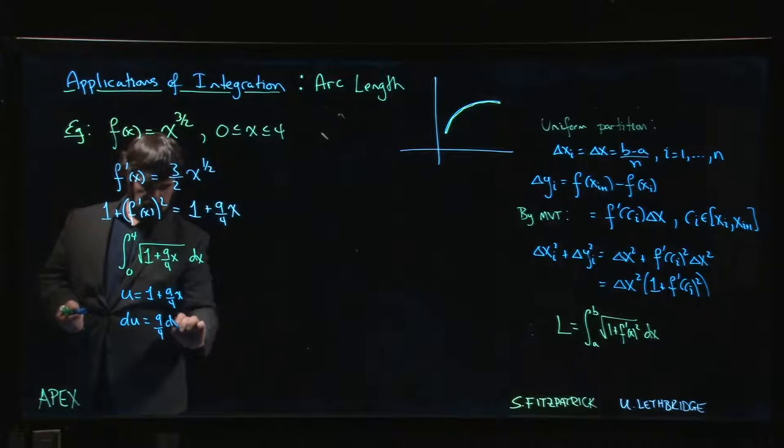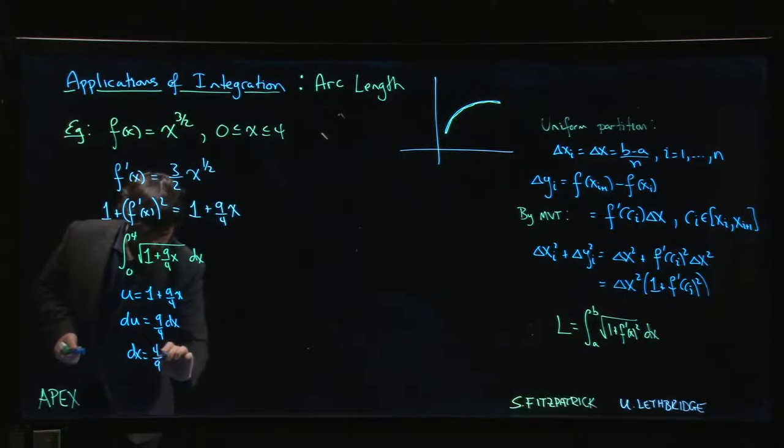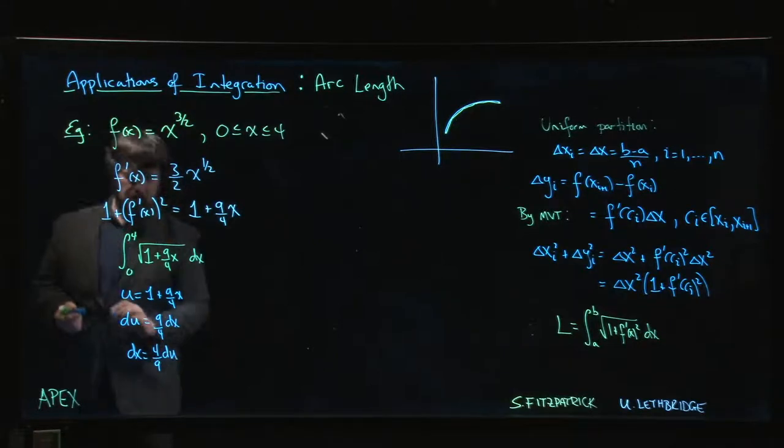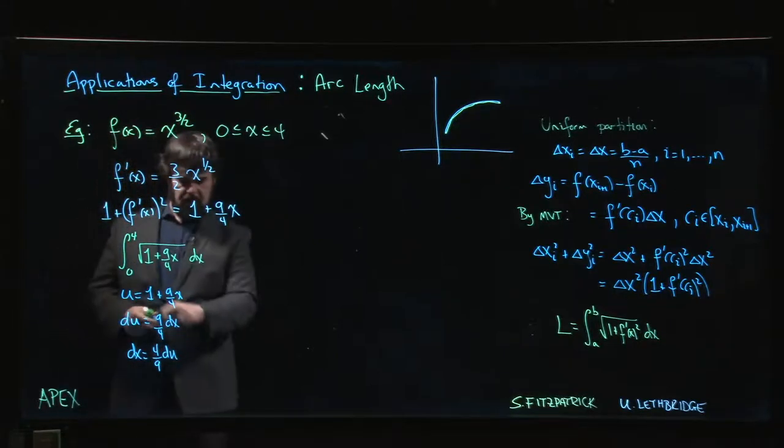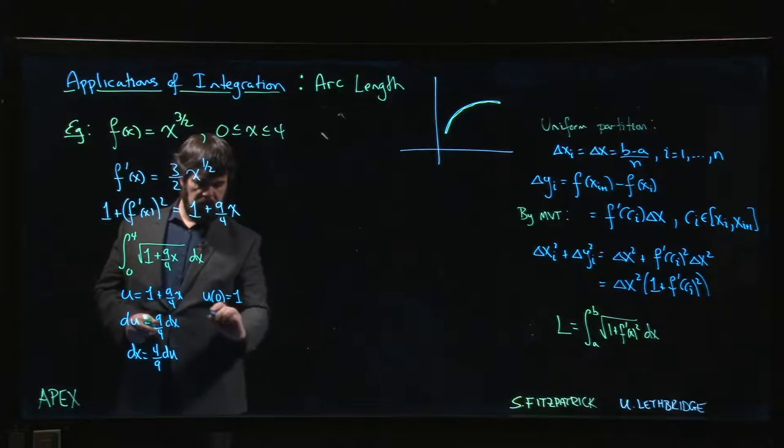Which is the same thing as saying that dx is 4 over 9 du. And from here we can also see that when x is equal to 0, u is equal to 1.